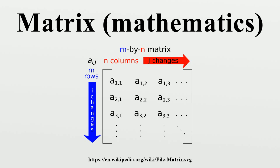A number λ and a non-zero vector v satisfying Av equals λv are called an eigenvalue and an eigenvector of A, respectively. The number λ is an eigenvalue of an N times N matrix A if and only if A minus λI_n is not invertible, which is equivalent to the characteristic polynomial p_A(x) equals det(A minus xI) equaling zero. This polynomial is of degree n and is called the characteristic polynomial of A. Therefore the polynomial equation p_A(x) equals 0 has at most N different solutions, i.e., eigenvalues of the matrix. They may be complex even if the entries of A are real. According to the Cayley-Hamilton theorem, p_A(A) equals 0 — that is, the result of substituting the matrix itself into its own characteristic polynomial yields the zero matrix.